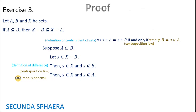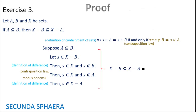We have then s is in X and s is not in A. Now, again, we can use the definition of difference: s is in X without A. At this moment we've got an argument that starts with s in X without B and ends with s in X without A. This is an argument that proves a containment — that containment being that X without B is contained in X without A. This would be the end of the proof for exercise number 3.